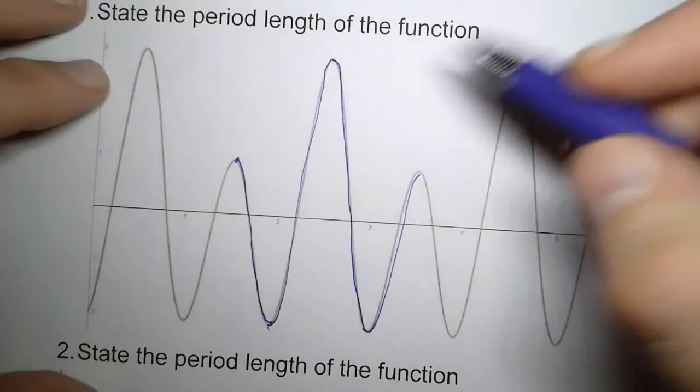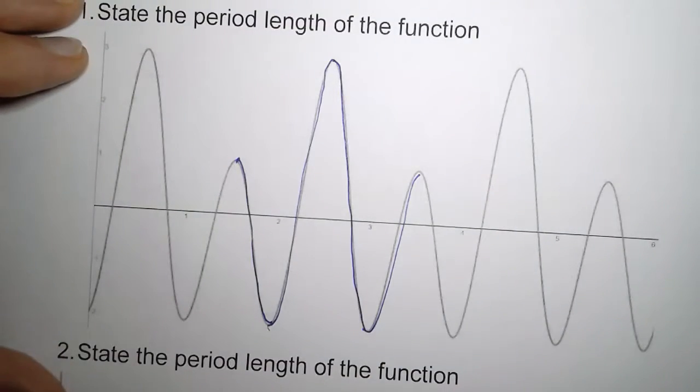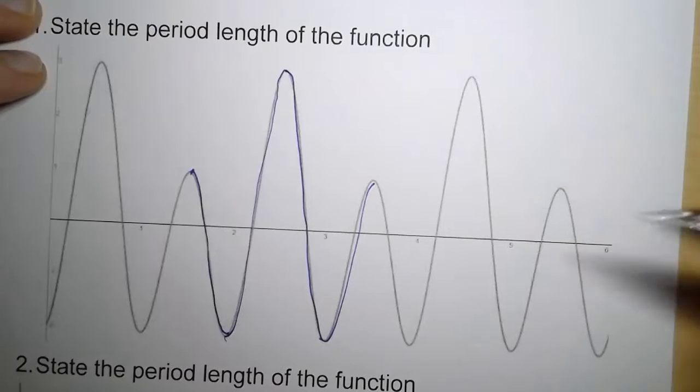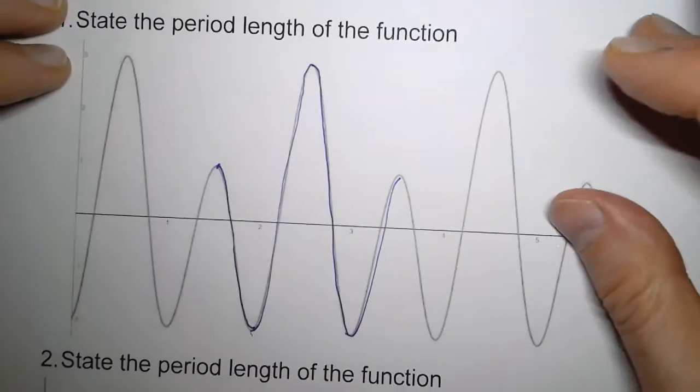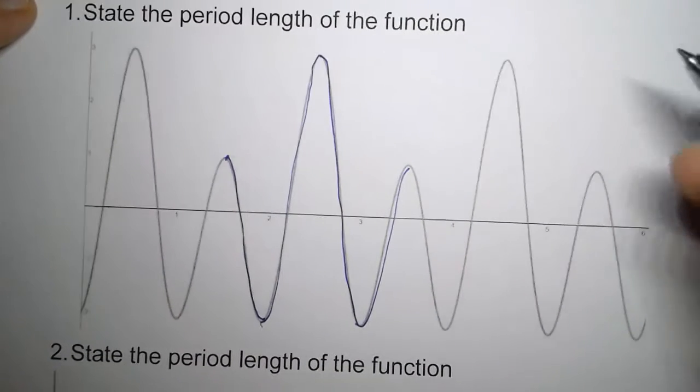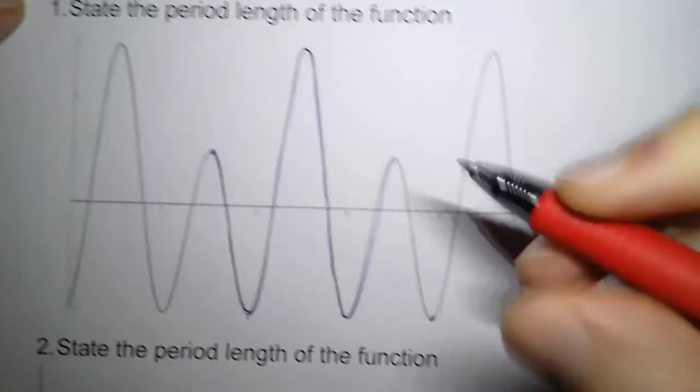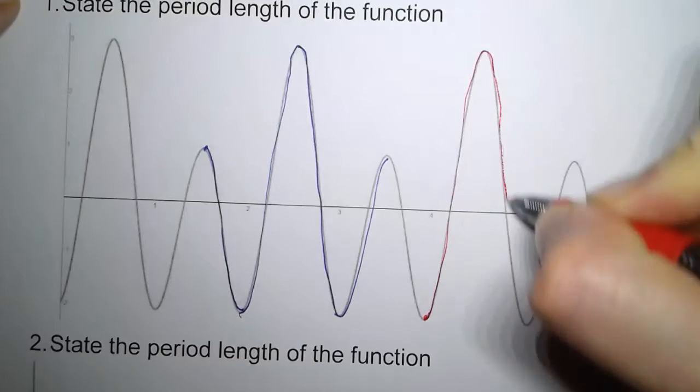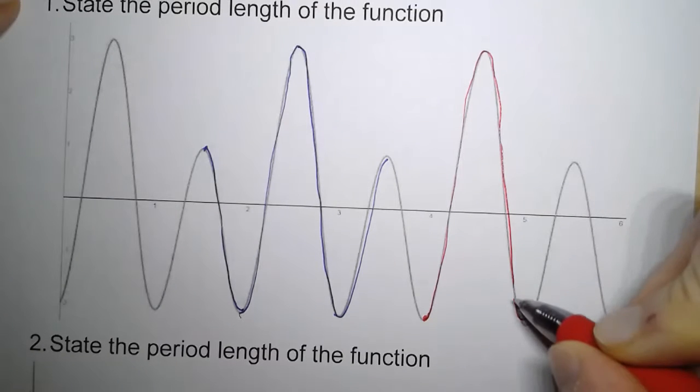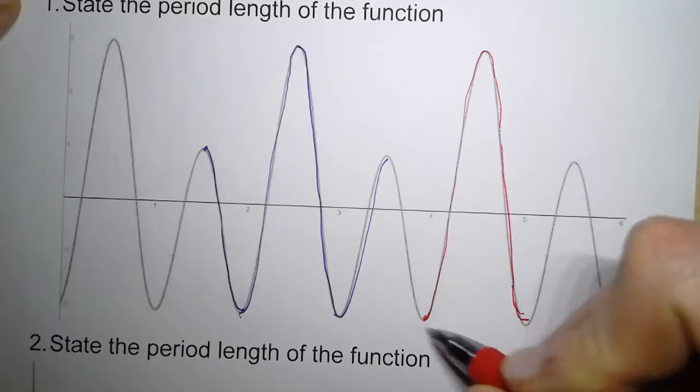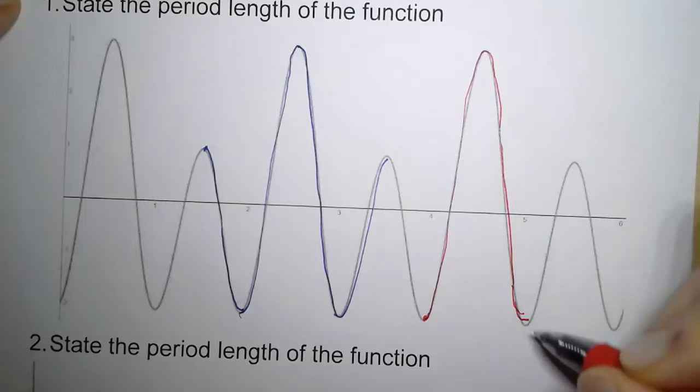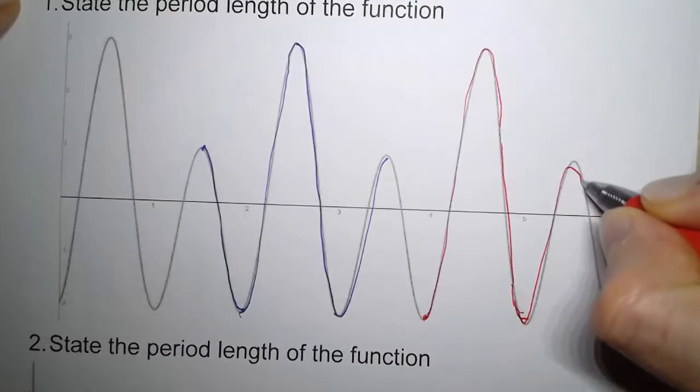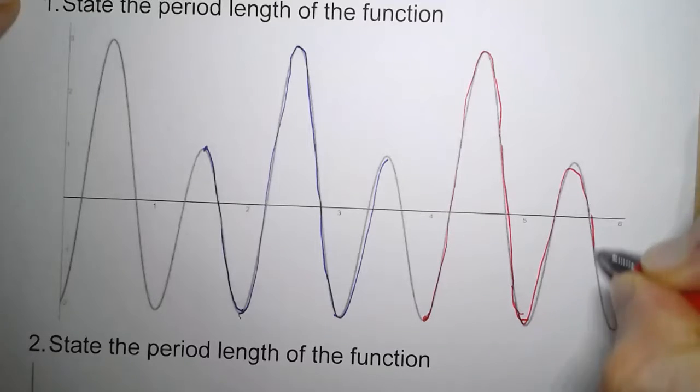So if I keep going all the way to there, and so now this is one full cycle of this graph. Now we can look at it another way by saying, well, what if we start here at this point? So I have to go up and then back down. Now I haven't completed a full cycle yet because I need to go through a large peak and through a small peak.